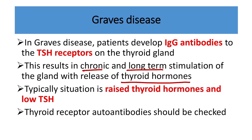In Graves' disease, the typical situation is raised thyroid hormone and low TSH. T3 and T4 hugely increase, and through the feedback mechanism, TSH level decreases. Thyroid receptor autoantibodies should be checked regularly.